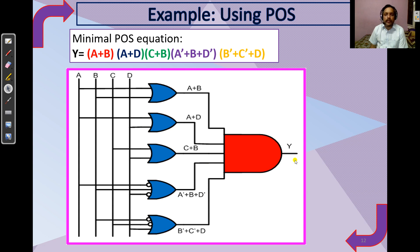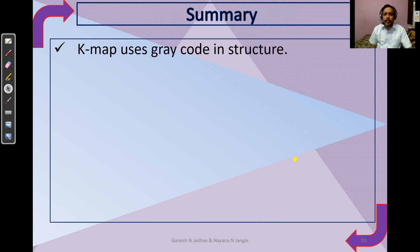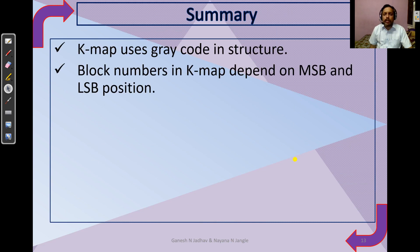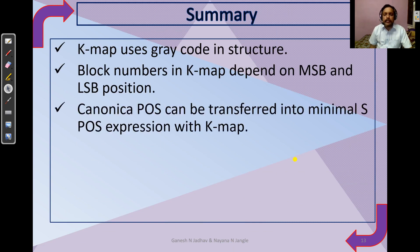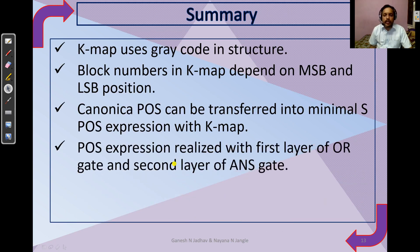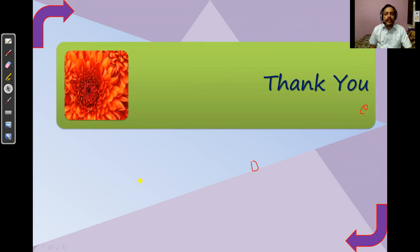To summarize: the K-map uses Gray code; block numbers depend on MSB and LSB positions; canonical POS can be converted to minimal POS using the K-map. The POS expression is realized with a first layer of OR gates and a second layer of AND gates. In the next session, we will see how to use don't-care conditions in the K-map. Thank you everyone for listening.